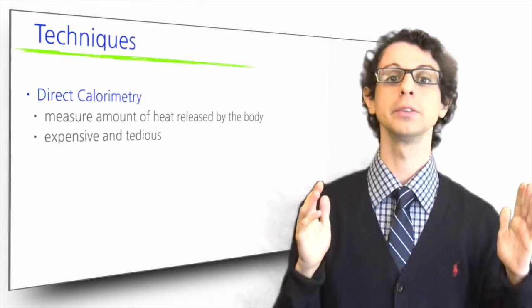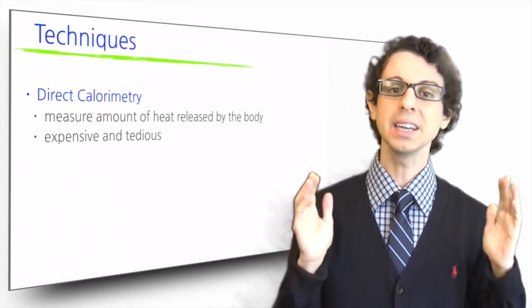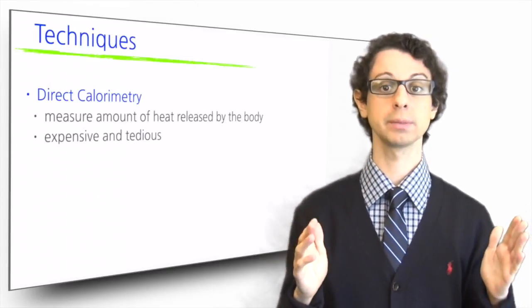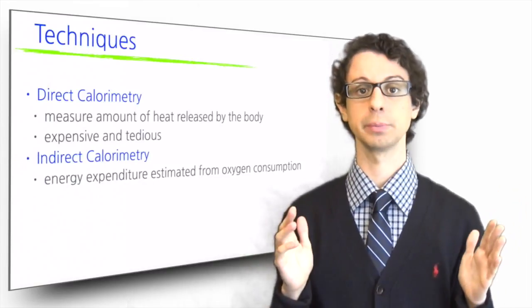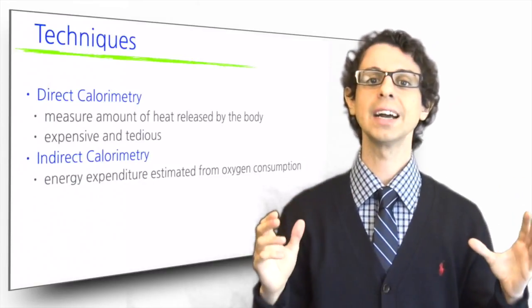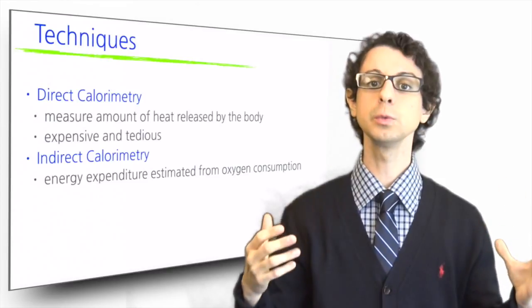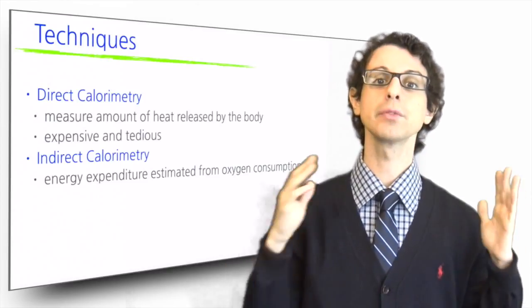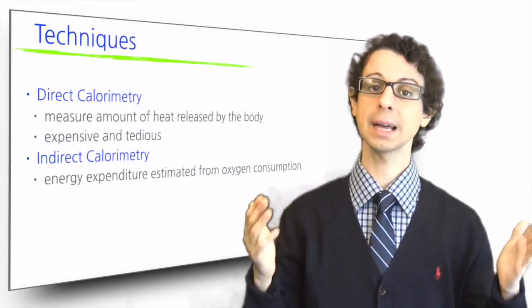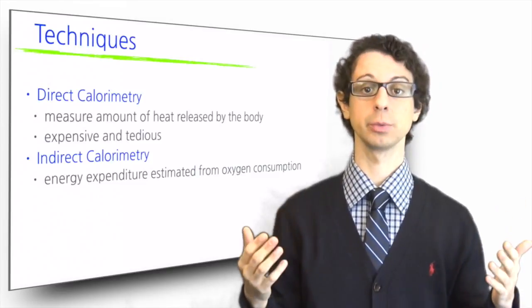This method is what we call direct calorimetry. An easier way to determine energy expenditure is by indirect calorimetry. Here you only need a device to measure how much oxygen a person consumes to perform an activity, and from that you can calculate with acceptable precision how much energy was spent.